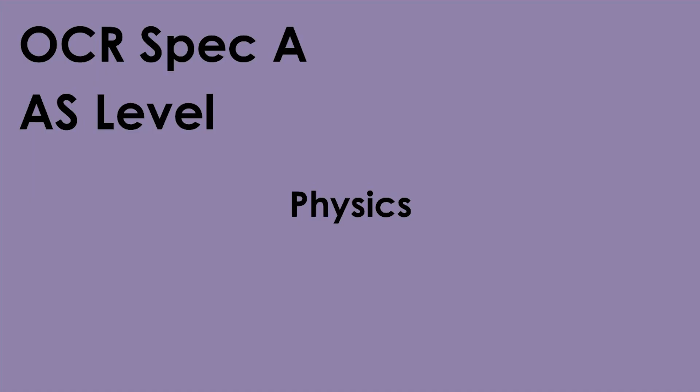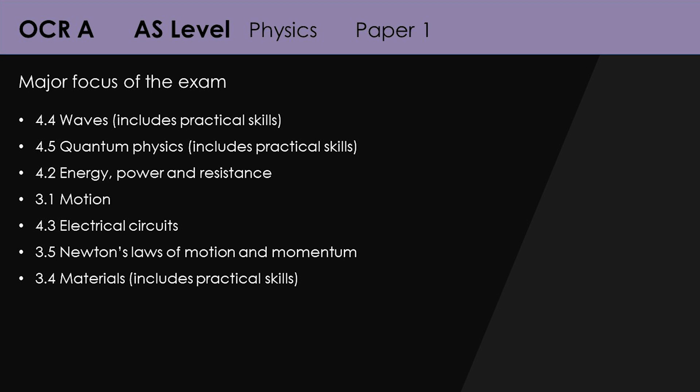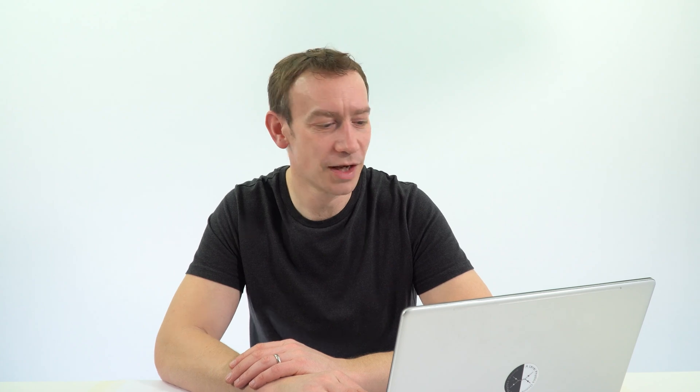For OCR A students — talking about the AS physics exams first. For year 12 students doing paper 1, the major focus covers all of waves and quantum physics, energy, motion, electrical circuits, Newton's laws, and materials. That's pretty much everything you need to revise anyway. When it comes to practical skills, there are quite a few practicals from the waves part of the course, so have a look at some videos to help you see practicals you might not have carried out in school. For paper 2, there's actually less on the list: forces and action, motion, and waves — although by the time you do paper 2, you'll have revised everything from paper 1 and your physics knowledge will be much greater.